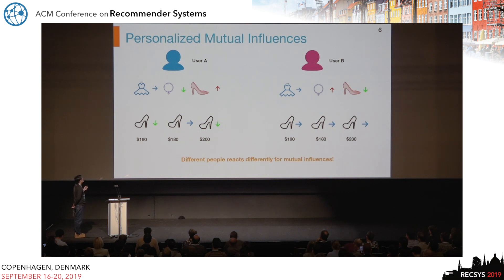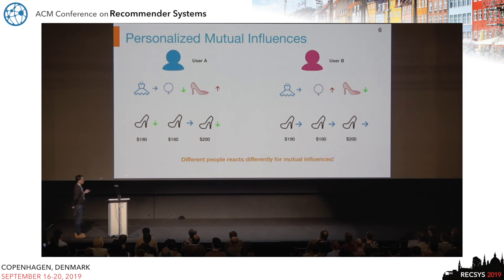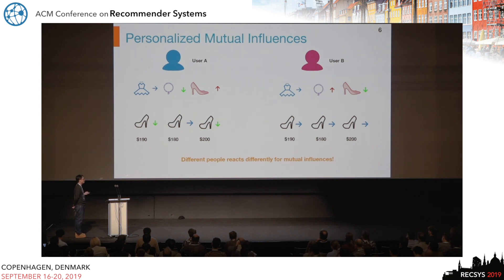In another case, if user A is price-sensitive, they will not click the expensive items. But for user B, if they are not sensitive to price, all three items will not affect each other. So different people will react differently to mutual influences.